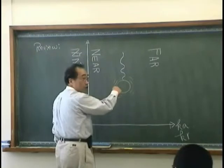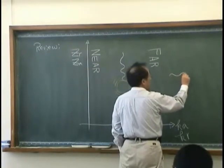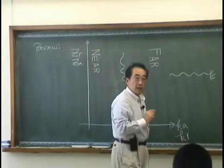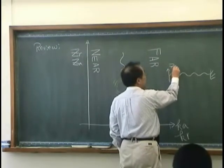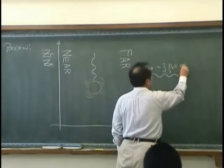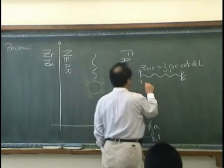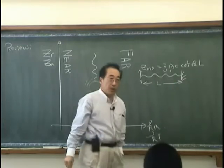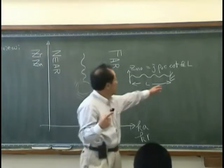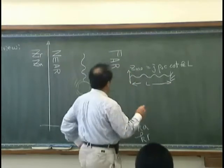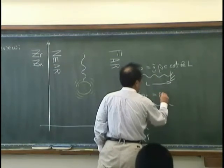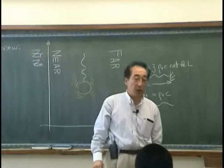So for the string case, the driving point impedance over here that we denoted ZM0 must look like J rho 0 C cotangent KL. And L is the length between the driving point to the rigid wall. For infinite string, ZM0 driving point impedance is the same as the characteristic impedance of the medium.